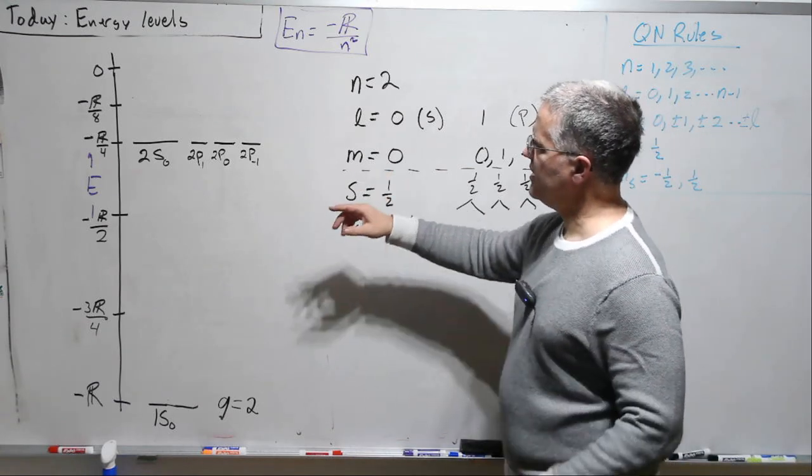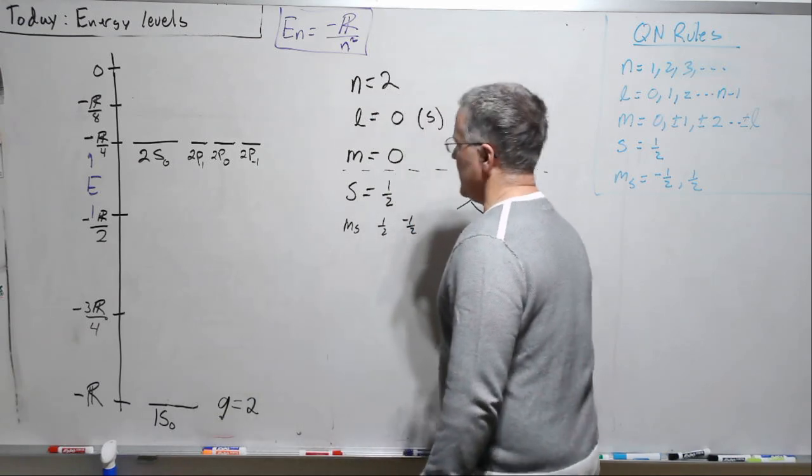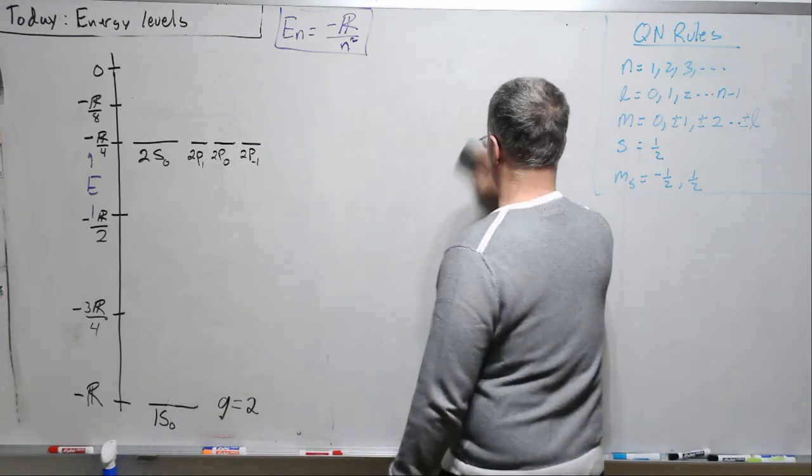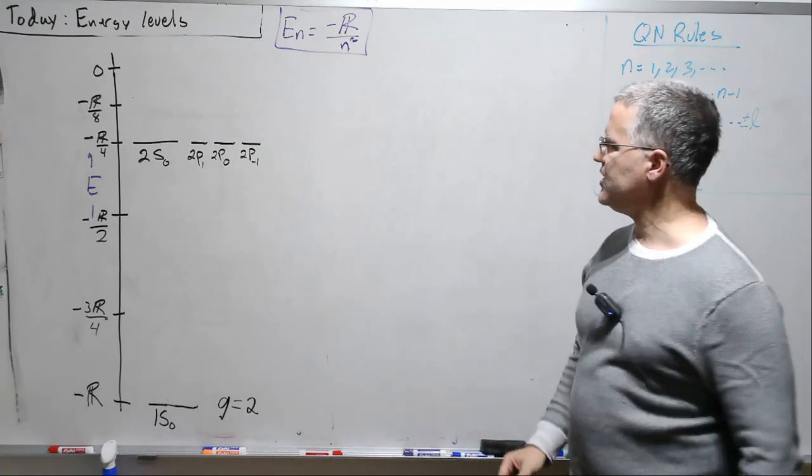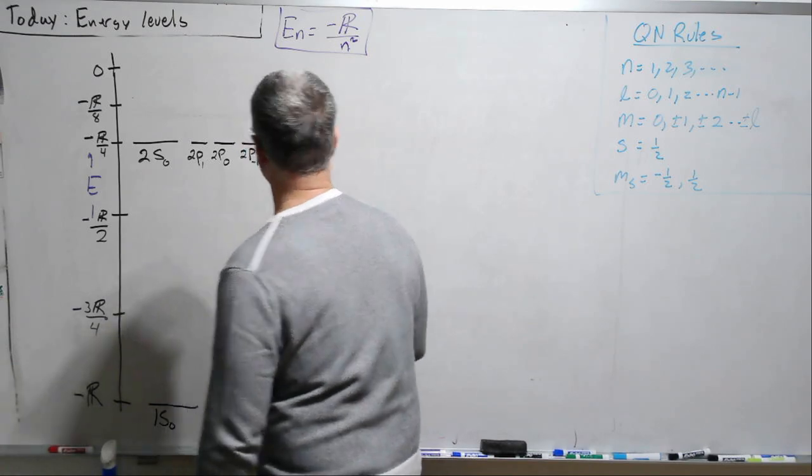What's the degeneracy here? Each one of these could hold an up or a down. And so there are four spatial states, two possible spin states for each, so the degeneracy is 8.